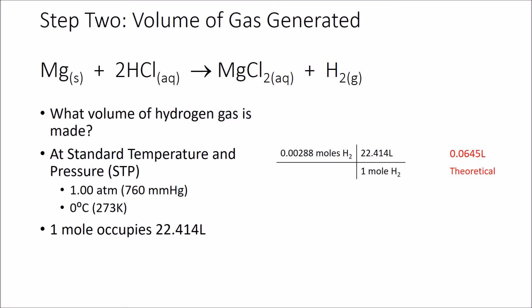Let's convert our number of moles into a volume by multiplying them together. You can see how it cancels out over there on the right. And our theoretical yield, the amount of gas that we should make, is 0.0645 liters, which is the same as 64.5 milliliters. So let's keep that number in mind. That's what we should actually make.